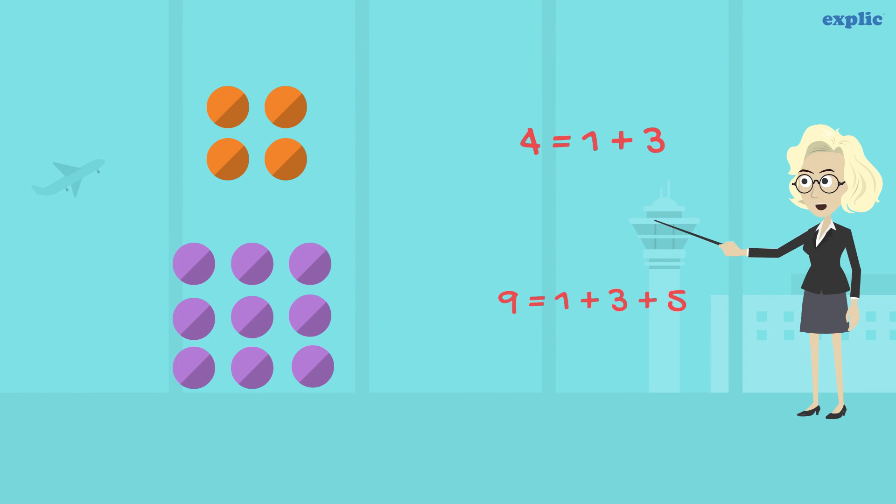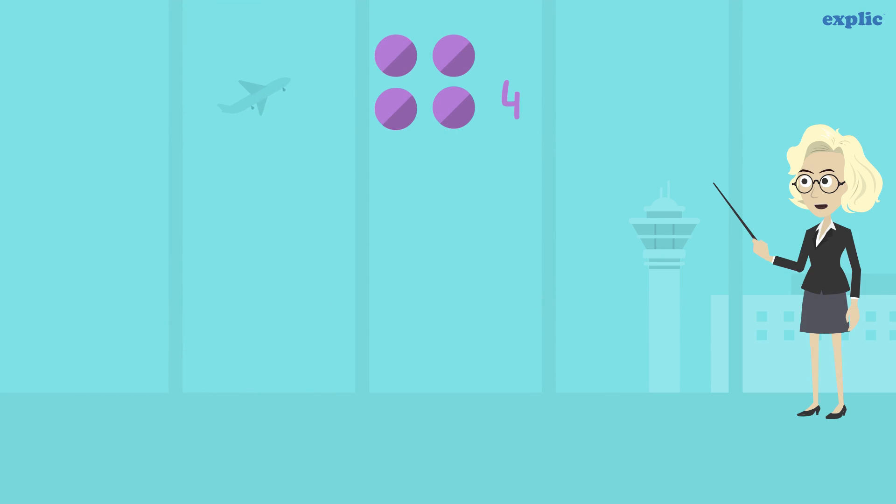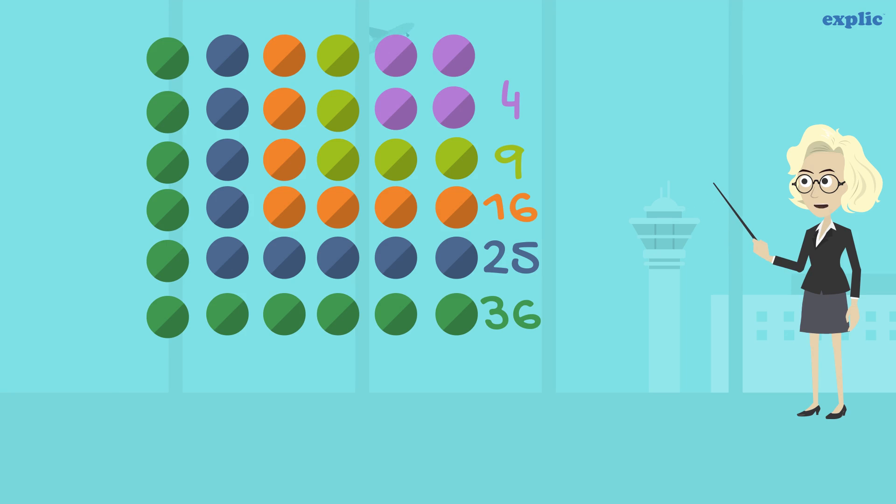These numbers can also be written as the addition of consecutive odd numbers. To find the next number of the square pattern, just keep adding the next rows and columns.